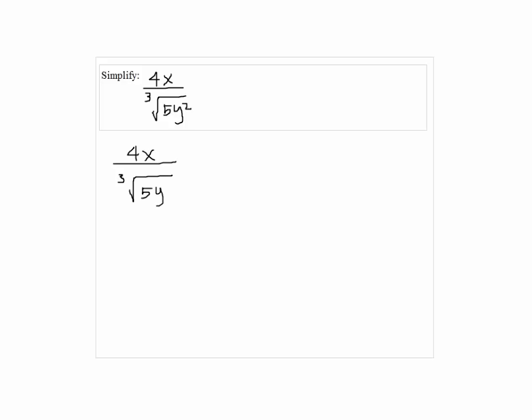Here, to get rid of the cube root of 5y squared, we're going to multiply the cube root of 5y squared on top and bottom twice so that we can have three cube roots of 5y squared, so we can get rid of the cube root.